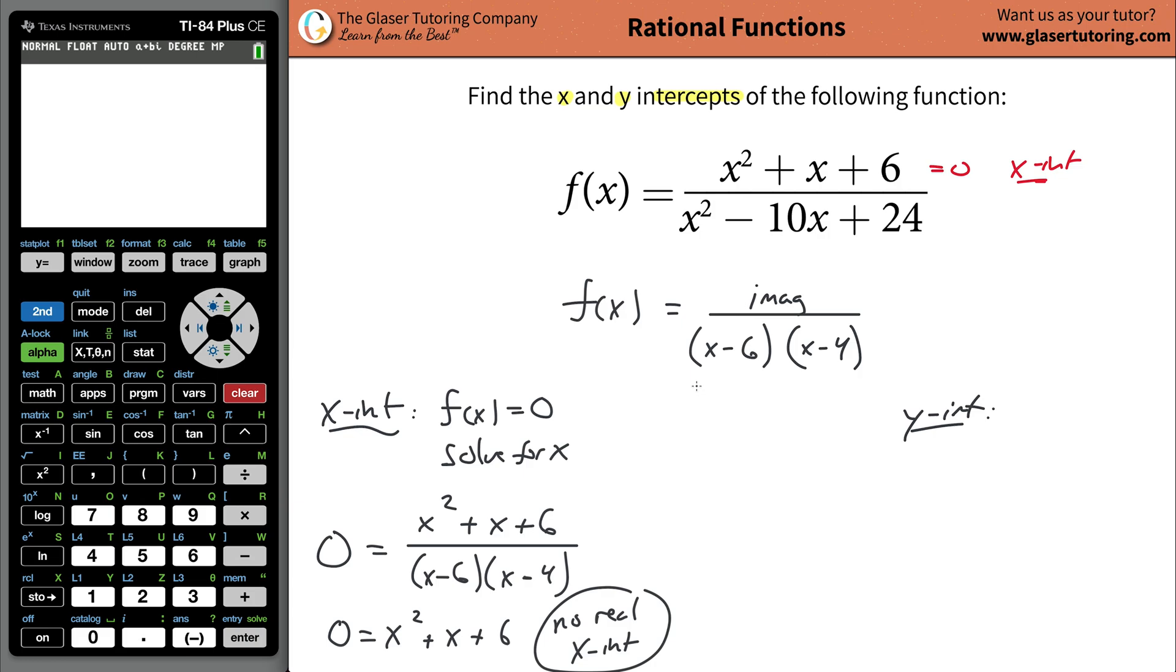Now we're going to do the same thing for the y intercept. You're going to set all the x values equal to zero and solve for f of x. So everywhere you see an x in this function, put a zero. This is zero squared plus zero plus six all over zero squared minus 10 times zero plus 24.